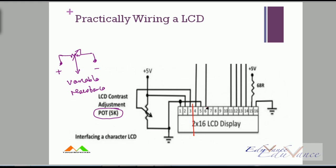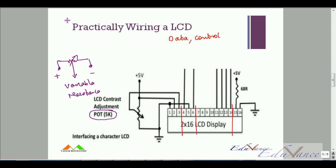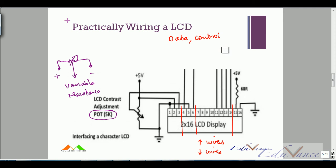To recap: three power pins, three control pins, eight data pins, and two backlight pins. We also understood the data register and control register. Now let's discuss using the LCD in four-bit mode versus eight-bit mode. In eight-bit mode you write eight bits at a time, which uses more wires. In four-bit mode you save on wires.